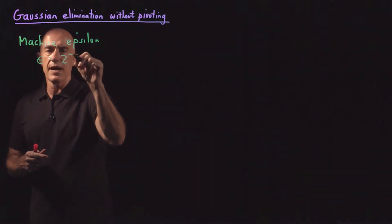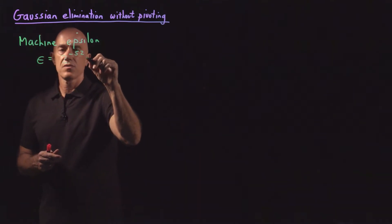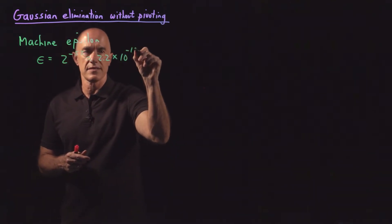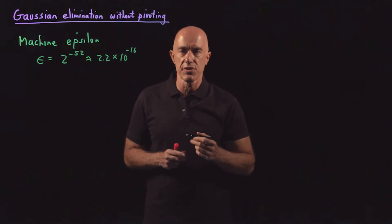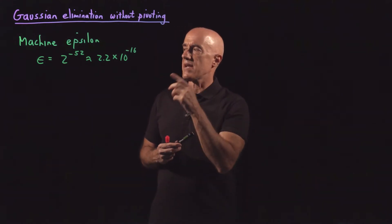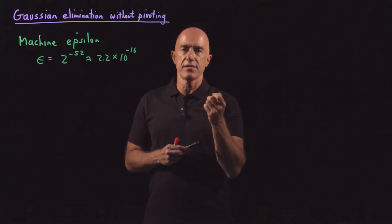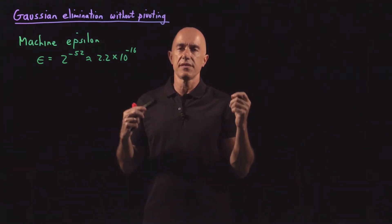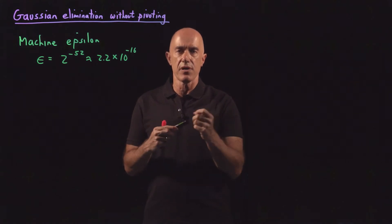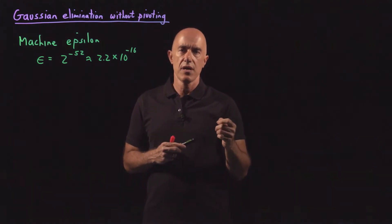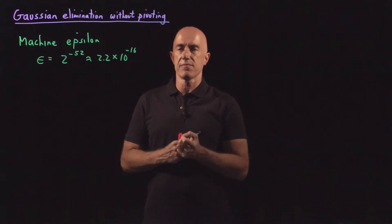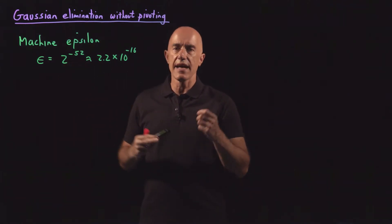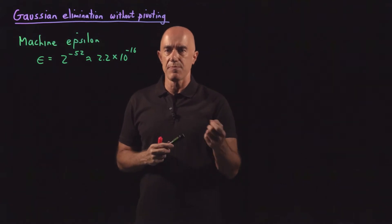It is 2 to the minus 52, which is about 2.2 times 10 to the minus 16. So it's a very small number, but it's the number that tells us the distance between one and the next largest number. It's actually the distance between any number between one and two and the next largest number. Because that's the definition of machine epsilon.